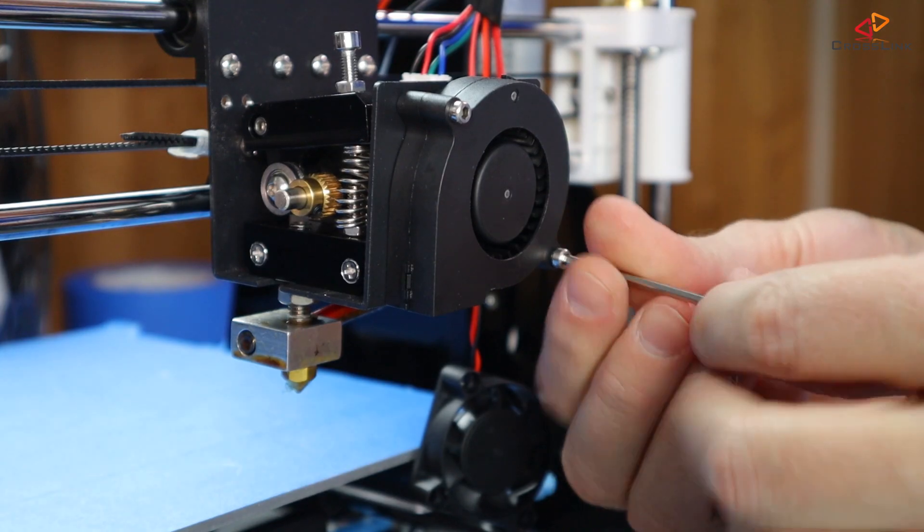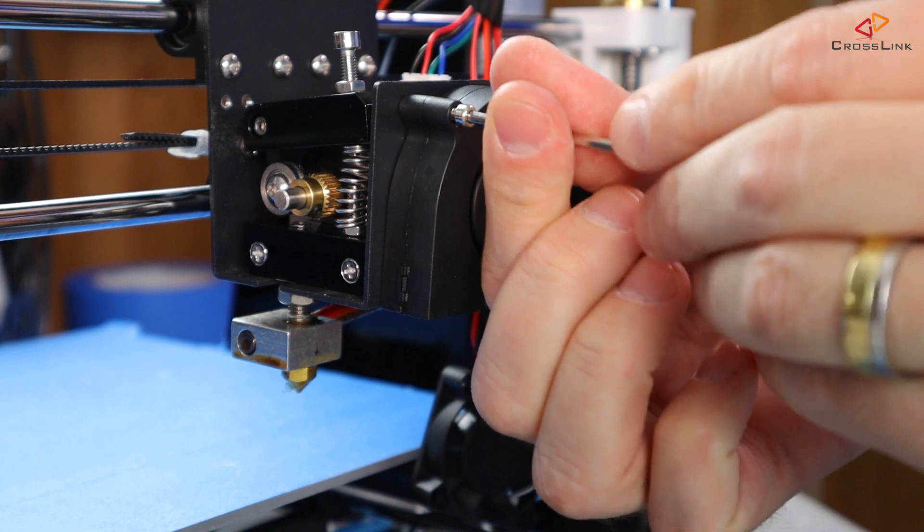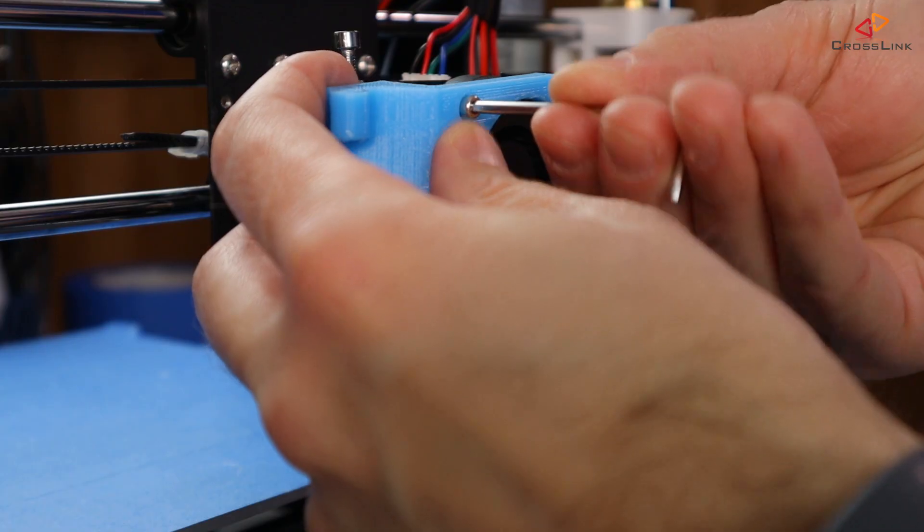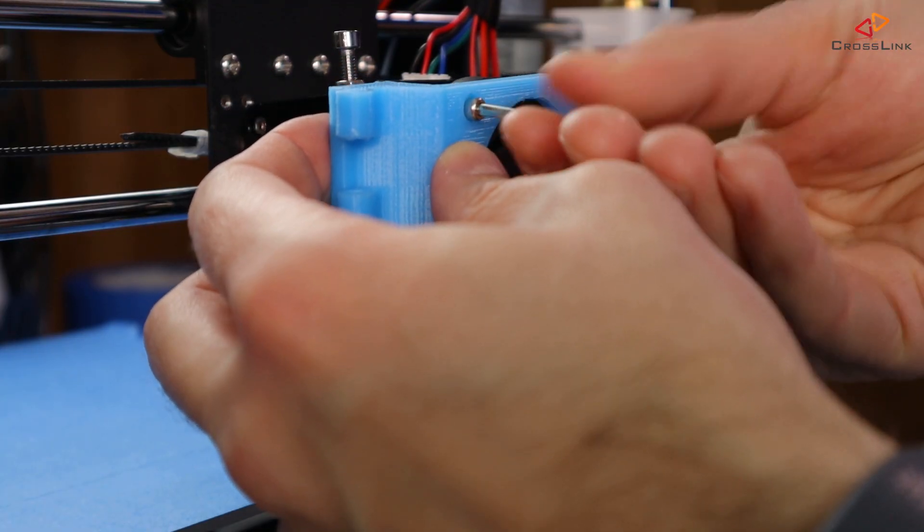Now remove the nozzle cooling fan and mount the fixed part of the hinge mod together with the nozzle fan. If the existing screws are too short you probably need two M screws that are slightly longer but it can also work with the existing ones so just test it out yourself.